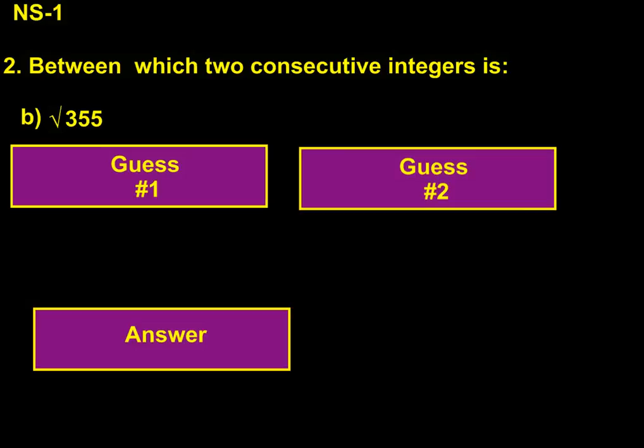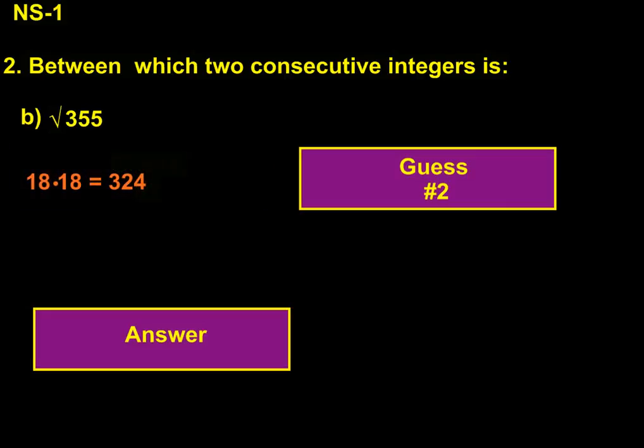So I'm going to backtrack a little bit from 20, and my first guess is going to be 18. So 18 times 18 is 324. It's close to 355, but it's on the low side.